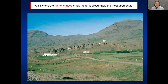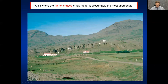Here is a sill in east Iceland emplaced around 1200 meters below the original surface, where a tunnel-shaped model would be appropriate. This is the front of the sill, the x-dimension is visible, and the z-dimension would go into the mountain — with some farms in Iceland for scale.